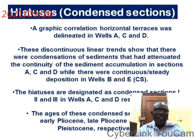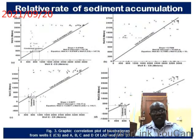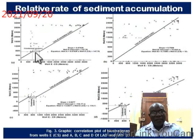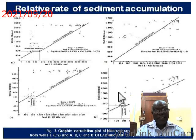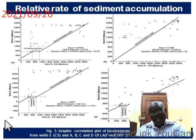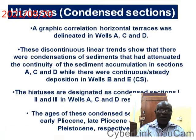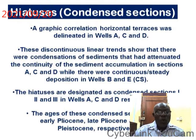Hiatus. The graphic correlation horizontal terraces were delineated in wells A, C, and D as can be seen in the graph above. There are terraces 1, 2, and 3. This is as a result of discontinuities in the accumulation of sediment over a period of time. These terraces are termed condensed sections because they are caused by condensation of sediment that attenuated the continuity of sediment accumulation in wells A, C, and D, while there was continuous or steady deposition of sediment in wells B and E.